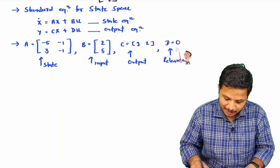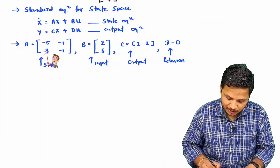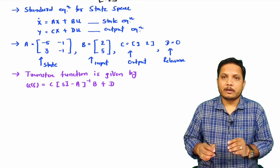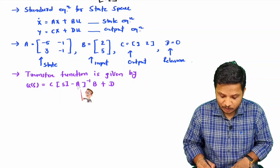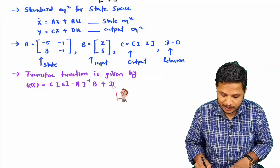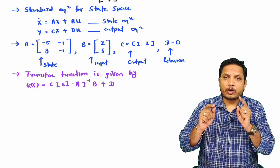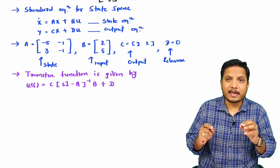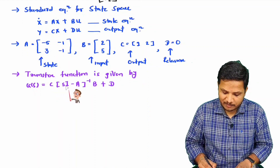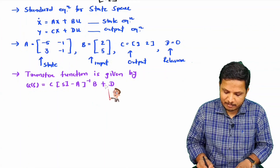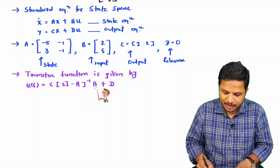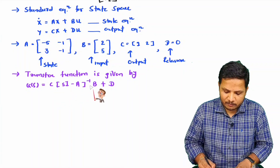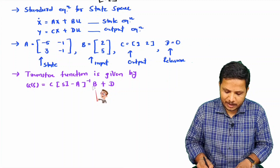Now, by using these four matrices we will identify the transfer function. The basic formula is G(s) equals C times (sI minus A) inverse times B, plus D. One important message: the order of this matrix multiplication is very essential. First there should be C, after that (sI minus A) inverse, after that B plus D — that is how the order must be maintained. If you don't maintain this order, there is a possibility of a false answer.